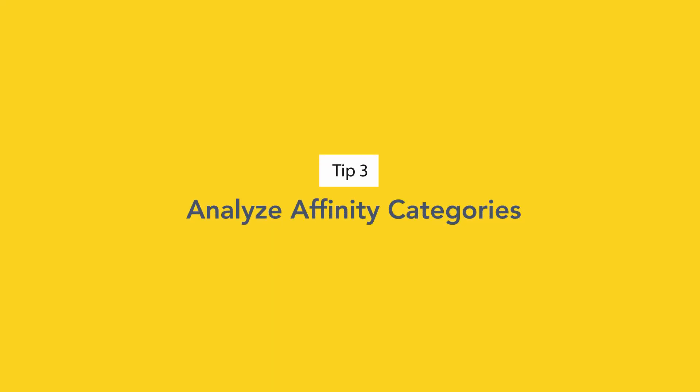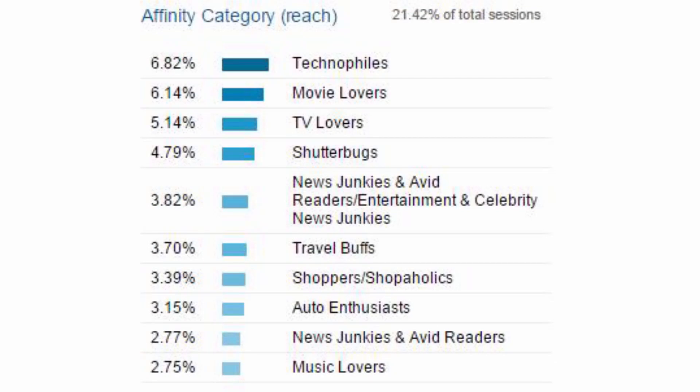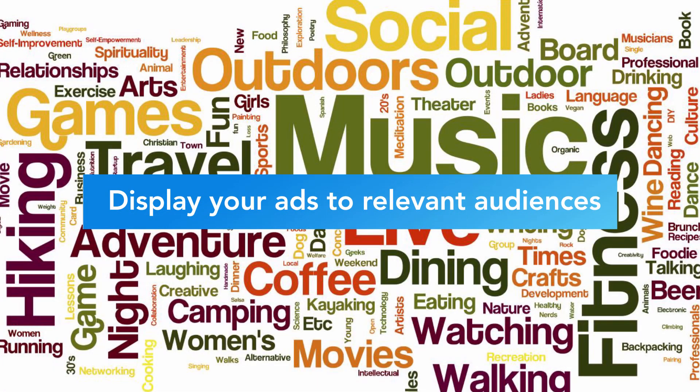Tip number three is looking at the Affinity Categories segment in Google Analytics. This is often overlooked by marketers. Rather than always trying to reach new audiences, look at the analytics data you already have — where your top conversions are coming from, the profile of those people, what they're into, and their age range. Once you look at your affinity categories you might find your audience is into automotives or travel, and you can then run Google Display ads targeting those groups. I find that highly valuable for the clients we work with.